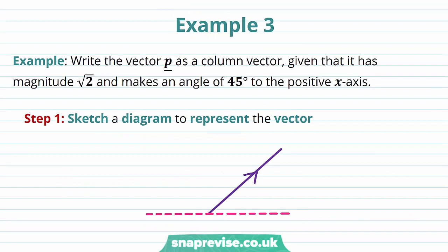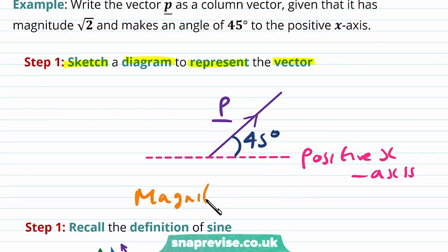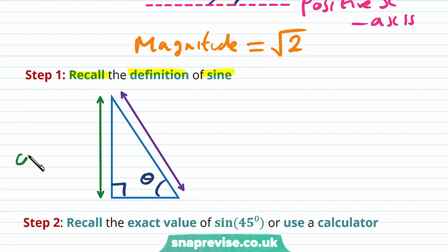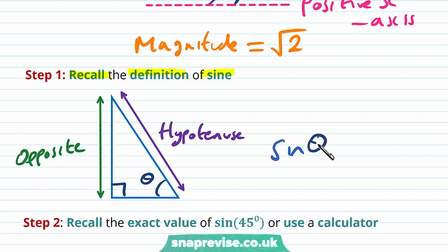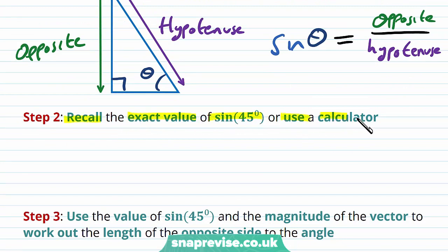Our last example asks us to write the vector p as a column vector, given that it has a magnitude of √2 and makes an angle of 45 degrees to the positive x-axis. We sketch a diagram showing the angle of 45 degrees with the positive x-axis and the vector p, with the magnitude of p equal to √2. We recall the definition of sine: given a right-angled triangle with angle theta, the sine of theta equals the opposite divided by the hypotenuse. We note that the exact value of sine 45 degrees equals 1/√2.